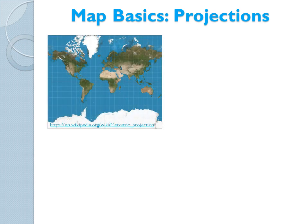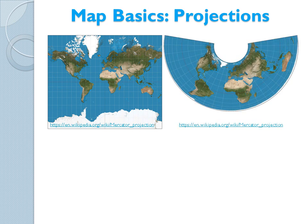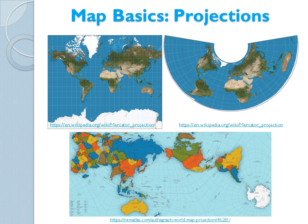Here's a Mercator projection, one of the most commonly used maps of the Earth, and one that we're all familiar with. Notice the enormous size of Greenland in this projection, almost as large as the size of Africa. This Albers projection shows a more accurate size of the landforms, but it's still not perfect. Even the orthograph, the most accurate map to date, has distortion issues, mostly concentrated in the Pacific Ocean. Here you'll notice that Greenland is far smaller than Africa.